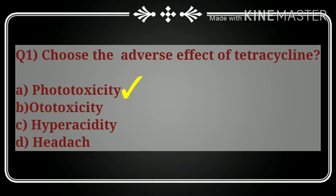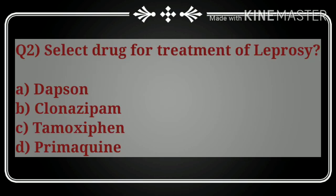Question number two: select the drug for treatment of leprosy. The options are: A) dapsone, B) clonazepam, C) tamoxifen, and D) primaquine. The correct answer is option A, dapsone. Dapsone is the drug used for the treatment of leprosy, as you would have studied in the classification of drugs.